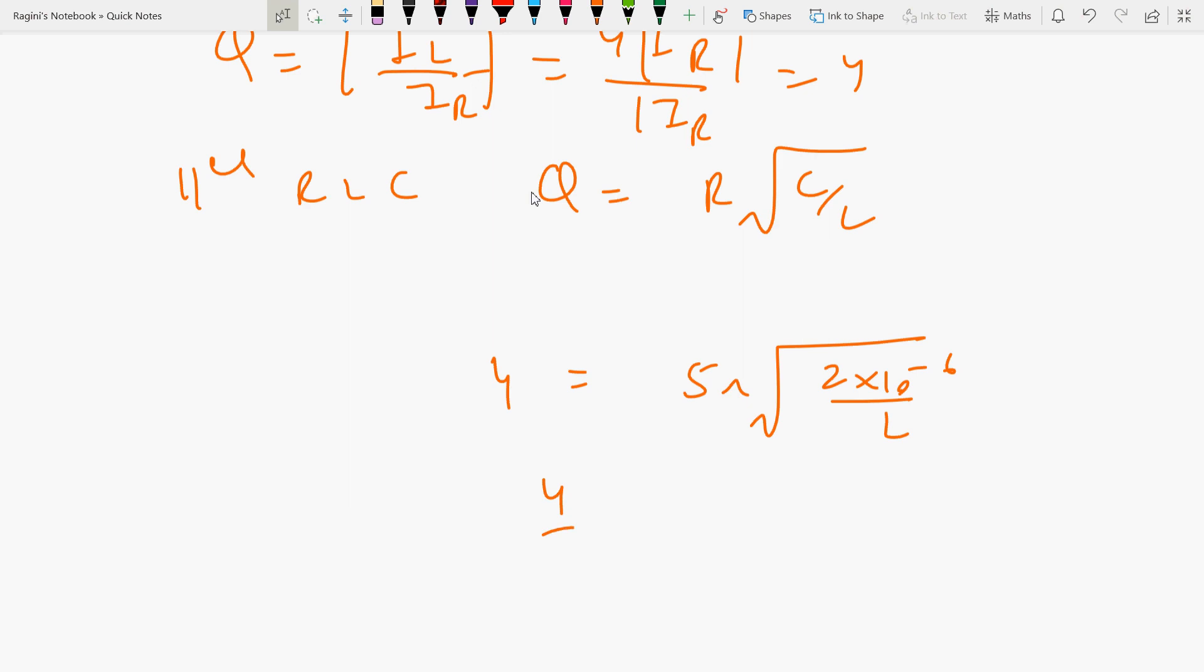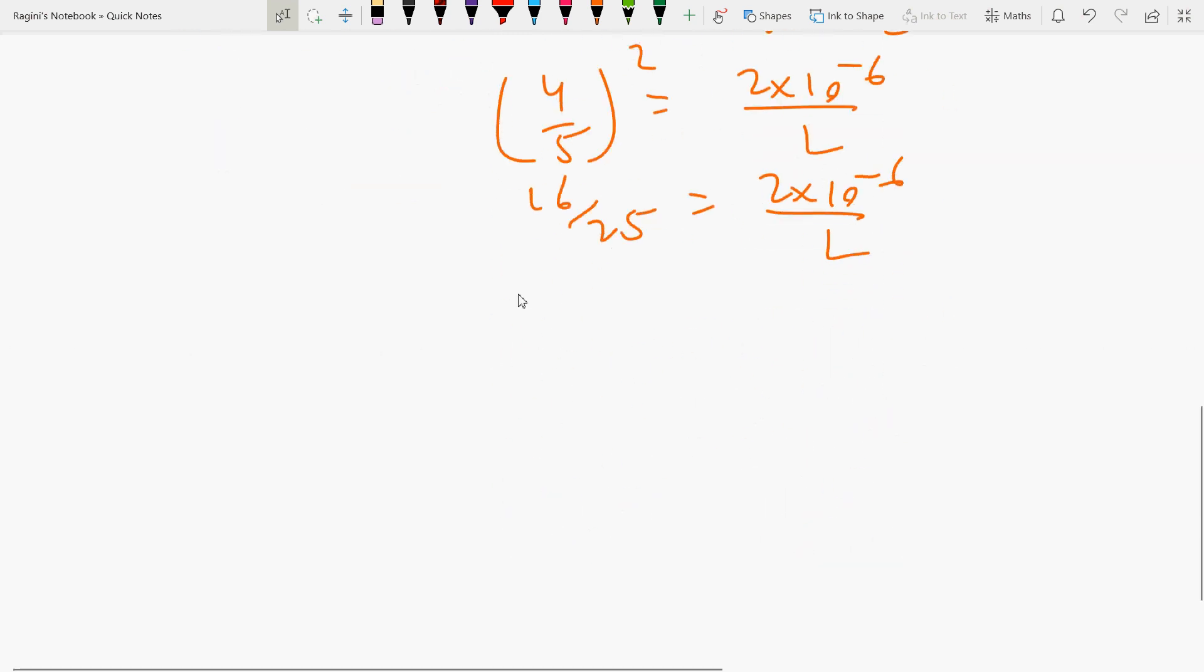So 4 by 5 under root square equals 2 into 10 to the power minus 6 by L. 16 by 25 equals... L equals 2 into 16. If you solve this completely, it will be 3.125 microhenries.